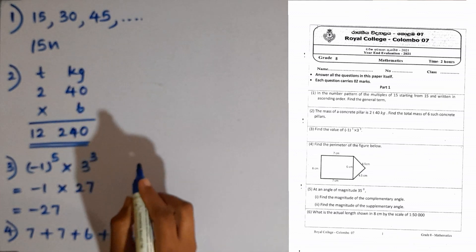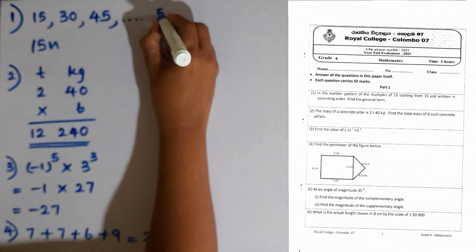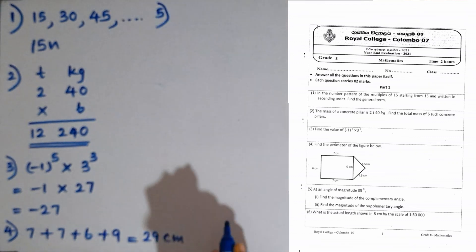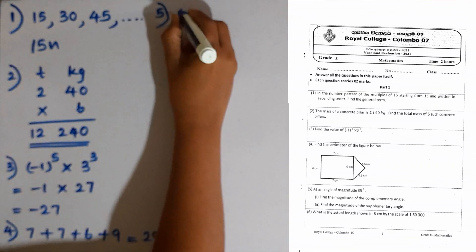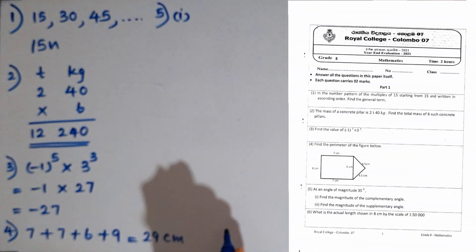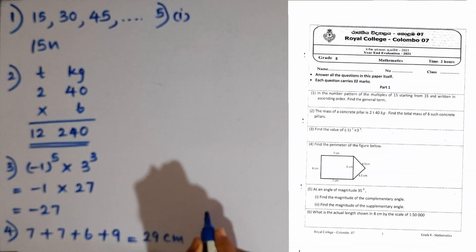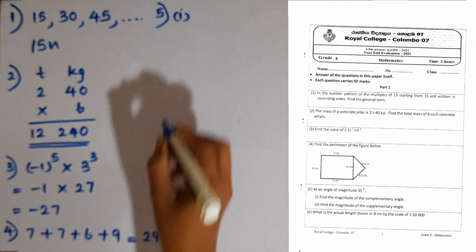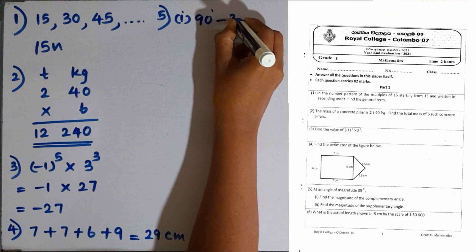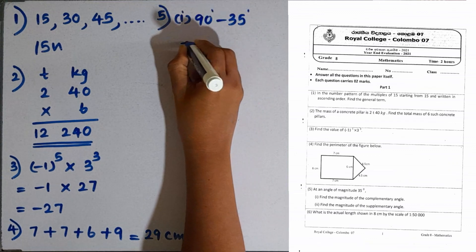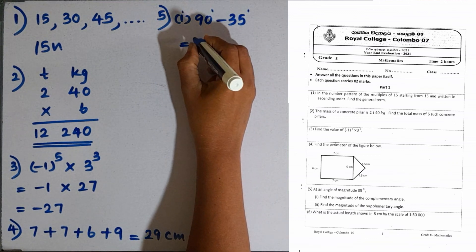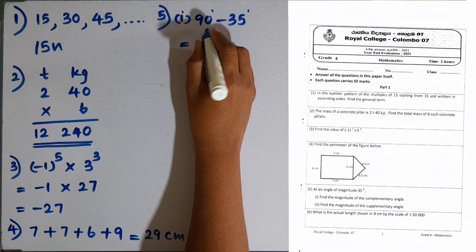Question number 5. At an angle of magnitude 35 degrees, find the magnitude of the complementary angle. Complementary means the sum is 90 degrees. So we can find the complementary angle by 90 minus 35. The value is 55 degrees.